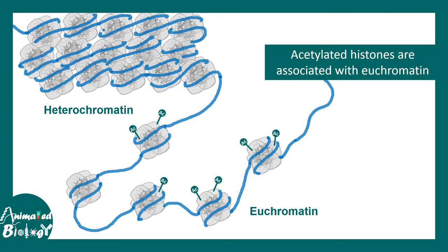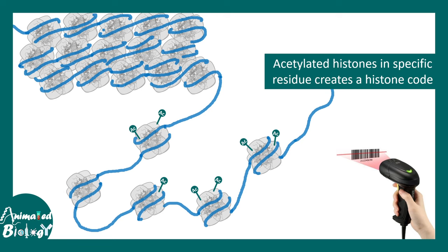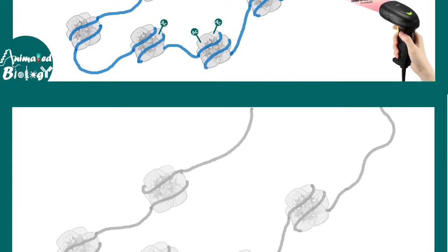Acetylated histones are often associated with euchromatin — a region of the chromosome which is always active in terms of gene expression. Generally, we don't see heterochromatin containing acetylated histones. Also, acetylated histones at specific residues create a histone code that can be read by certain molecules — like a barcode scanner in a supermarket.